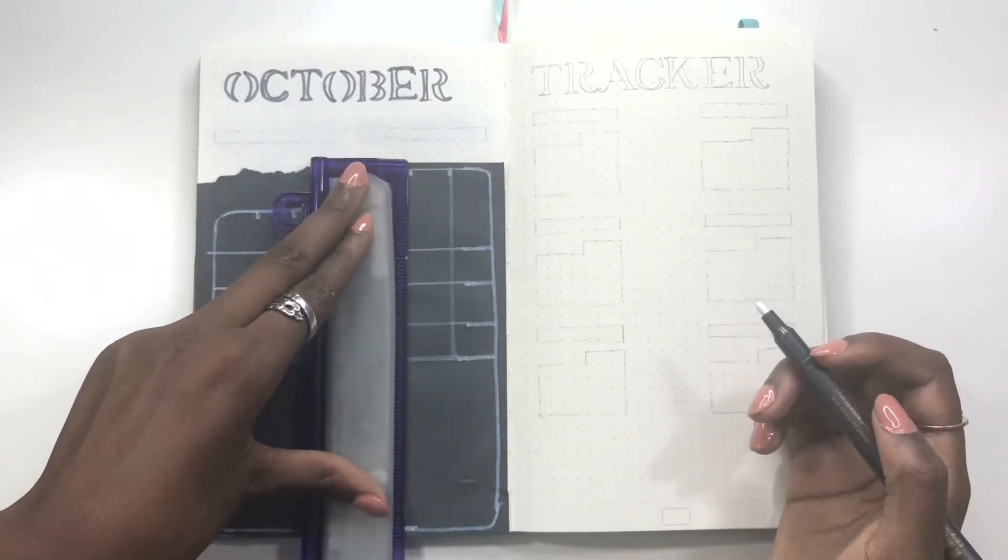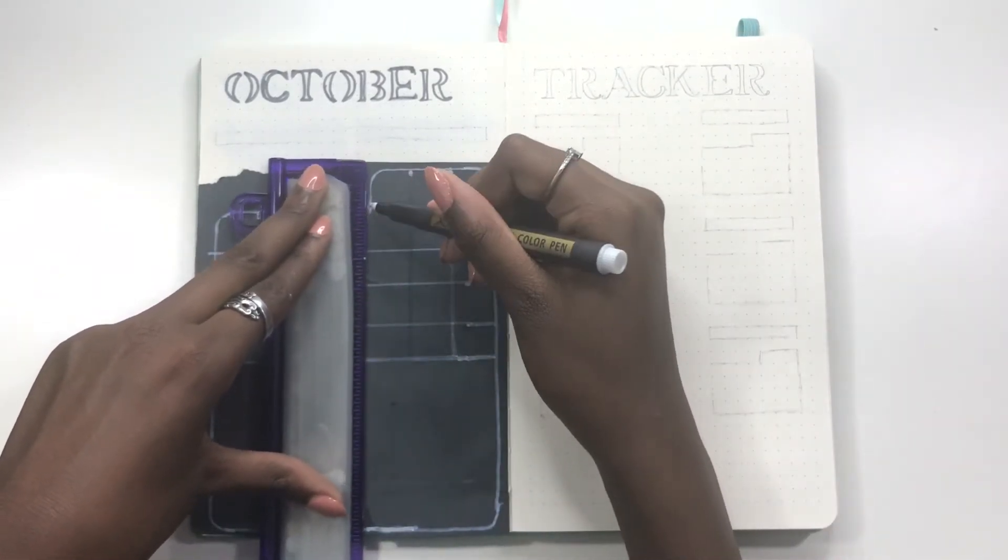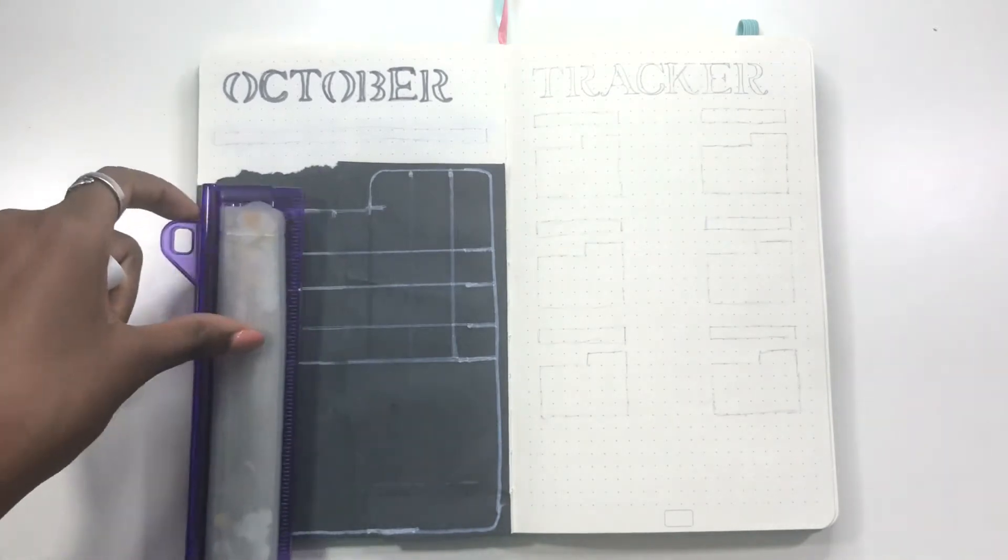So I made my calendar, then I put my events tab right below and I was really happy with how that turned out.